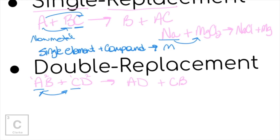I like to think of single and double replacement like a dance. Single replacement: B and C are dancing, A cuts in, takes the dance partner, and leaves B all alone. Double replacement: there are two couples dancing — A with B, C with D. Then for some reason they just switch partners, and now A is dancing with D and C is dancing with B. Double replacement.